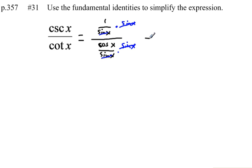This leaves me with, in my numerator, I've just got 1, in my denominator, I've got the cosine of x.